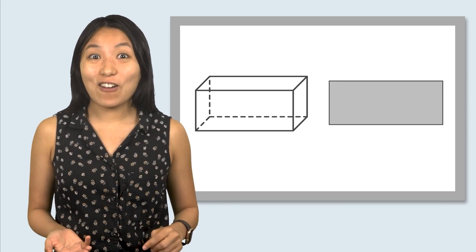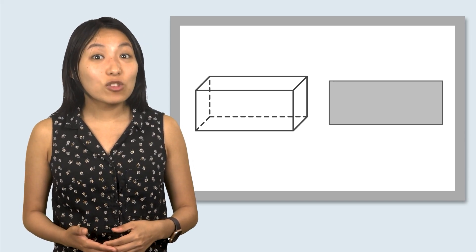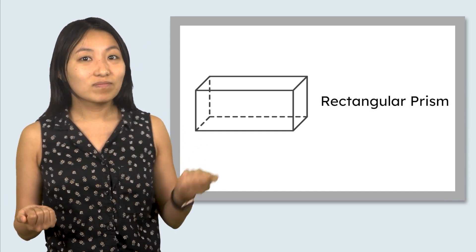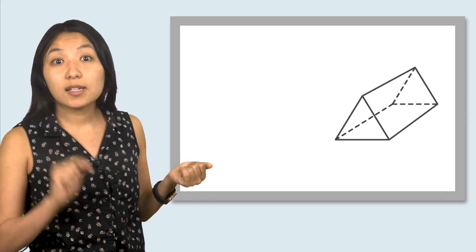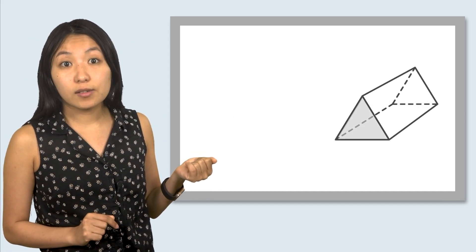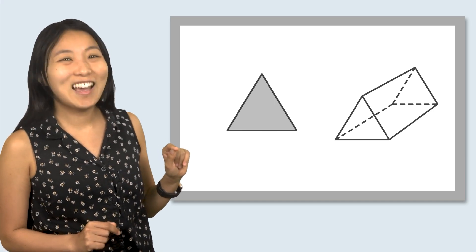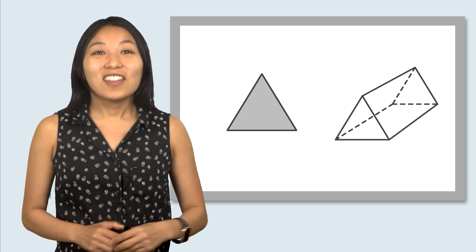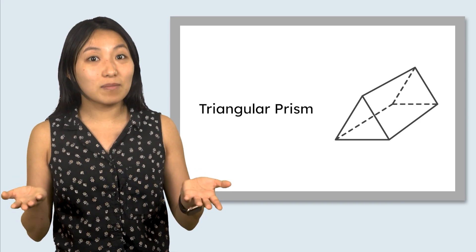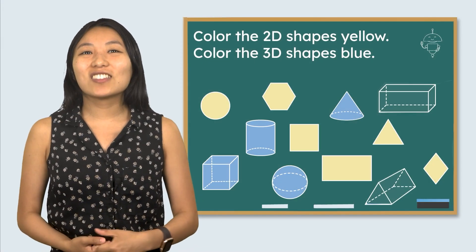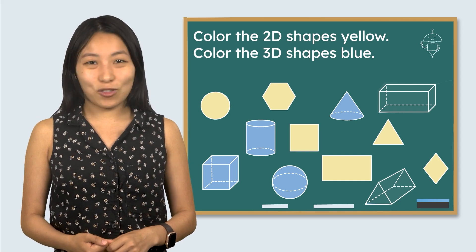Yes, a rectangle. Because of that, this 3D shape is called a rectangular prism. What about this shape? Let's take a close look at some of those faces. What 2D shape do they look like? Yep, triangles. This shape is called a triangular prism because of its triangular faces. Let's color these new shapes blue since they're 3D.